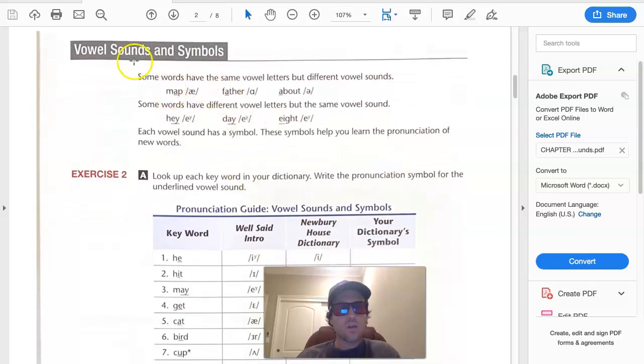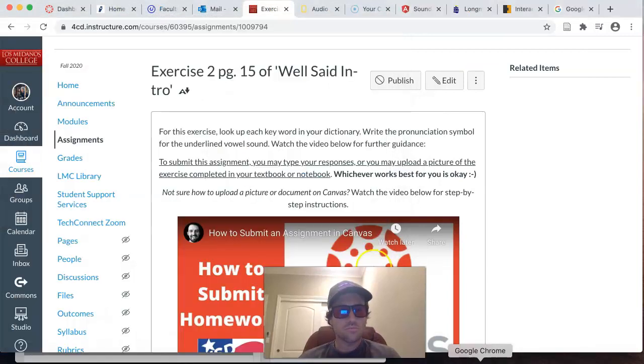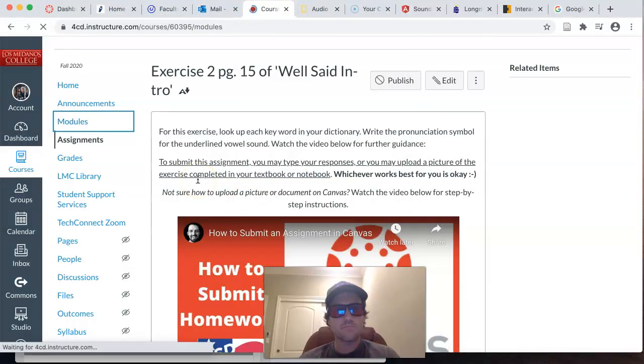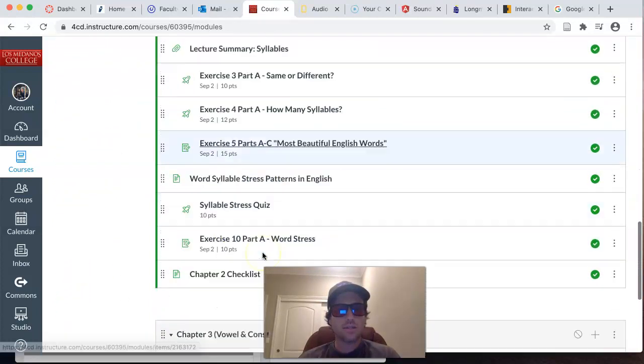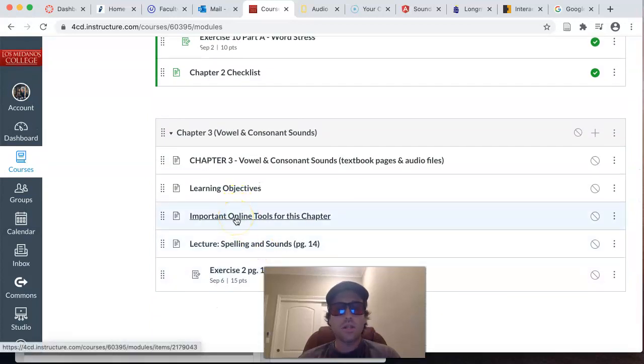So essentially what we're looking at is the sounds of vowels and their symbols, as some words have the same vowel letters but different vowel sounds and different vowel letters in the same vowel sound. So if you want a glossary of all the different vowel sounds in English, you'll want to go into our module for Chapter 3. You want to go where it says Important Online Tools for this Chapter.